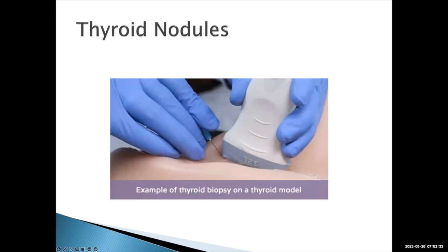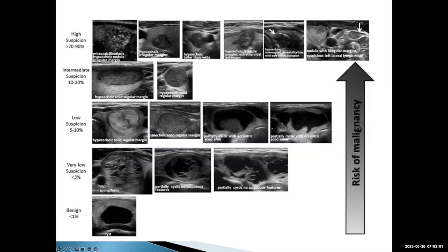Here's an example of a thyroid biopsy showing clean technique rather than aseptic technique — no probe cover, possibly no sterile gloves. To determine which nodules to biopsy, we look at different criteria using ultrasound. The most benign appearing nodule is a cyst — anechoic, no solid components, no septations. Moving up in risk: cystic with multiple septations, spongiform appearance, partially cystic with a small solid component. These have very low risk of malignancy.